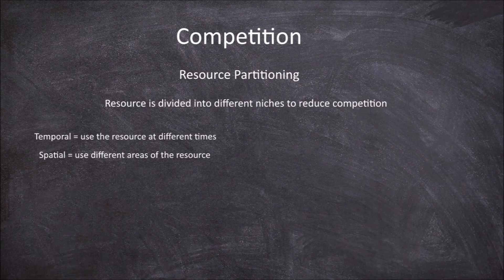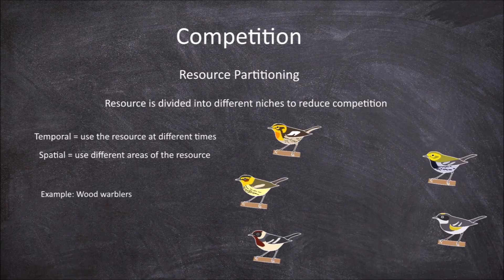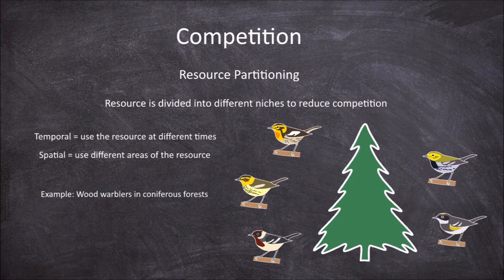An example of resource partitioning is seen between five species of wood warblers that share the same breeding grounds in mature coniferous trees, sharing the same food resource. These different wood warbler species spend most of their time feeding predominantly in different areas of the tree.